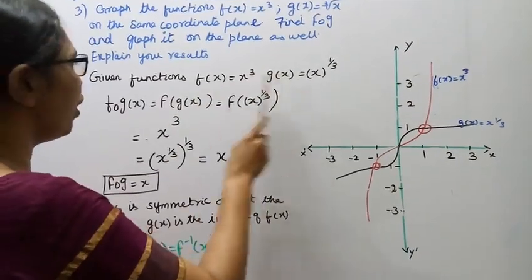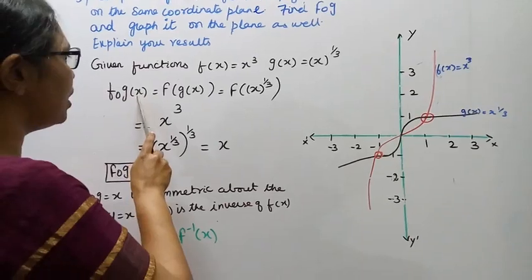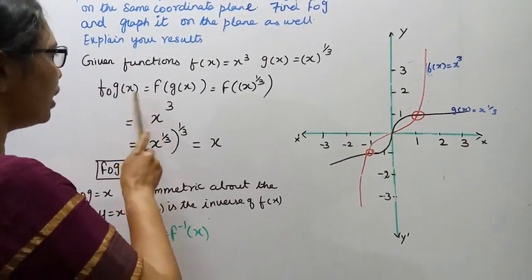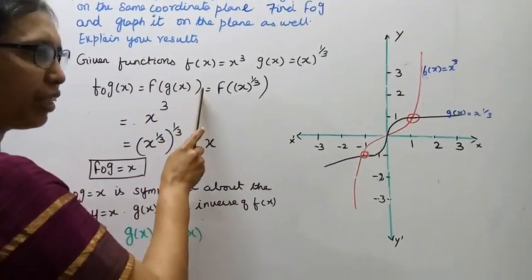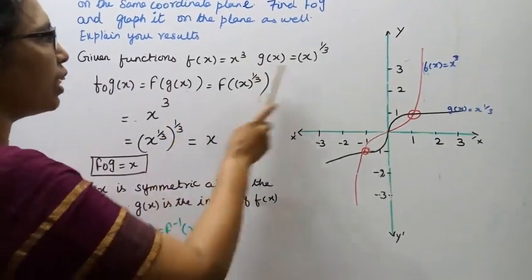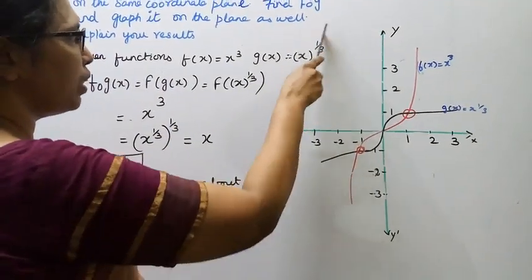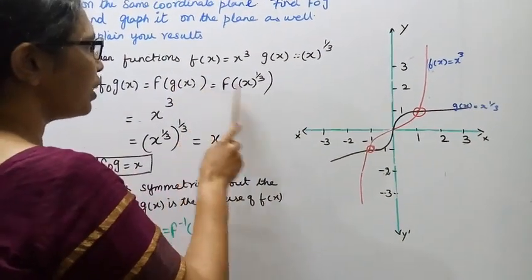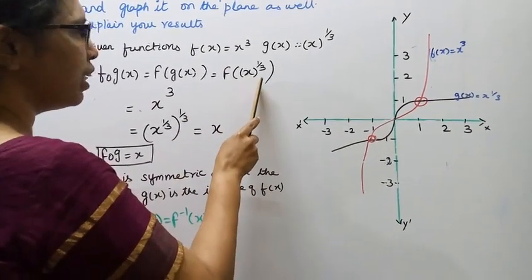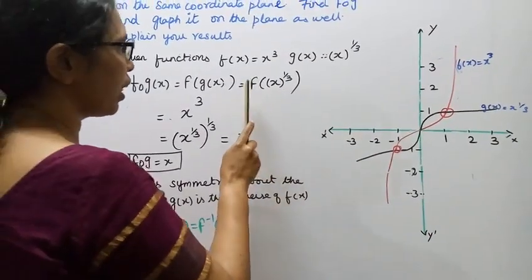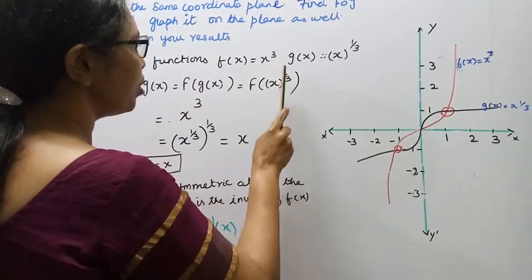f(x)∘g(x), f composite g of x, then f(g(x)). g(x) is x^(1/3), so we substitute x^(1/3).